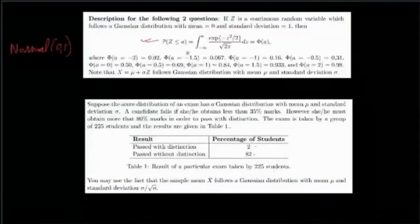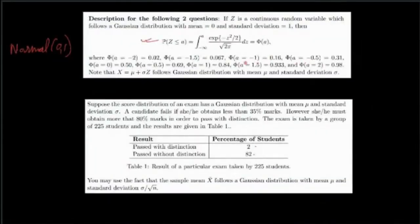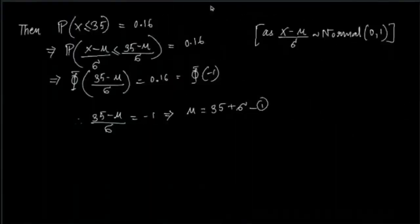From this list of values we'll be referring to continuously, we have Φ(-1) = 0.16. So let's make this Φ(-1). These two are equal, so let's equate them: (35 - μ)/σ = -1. From there we get μ = 35 + σ. This is the first equation.